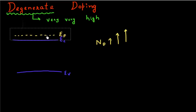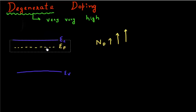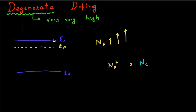If I keep on increasing the number of donor atoms, it will keep on moving closer and closer, and it might even cross the conduction band. Let's see when it can cross the conduction band. If my number of ionized dopant atoms is more than the effective density of states in my conduction band, then my Fermi level will in fact be inside my conduction band. The good question to ask is: at what point do I call my semiconductor degenerate?